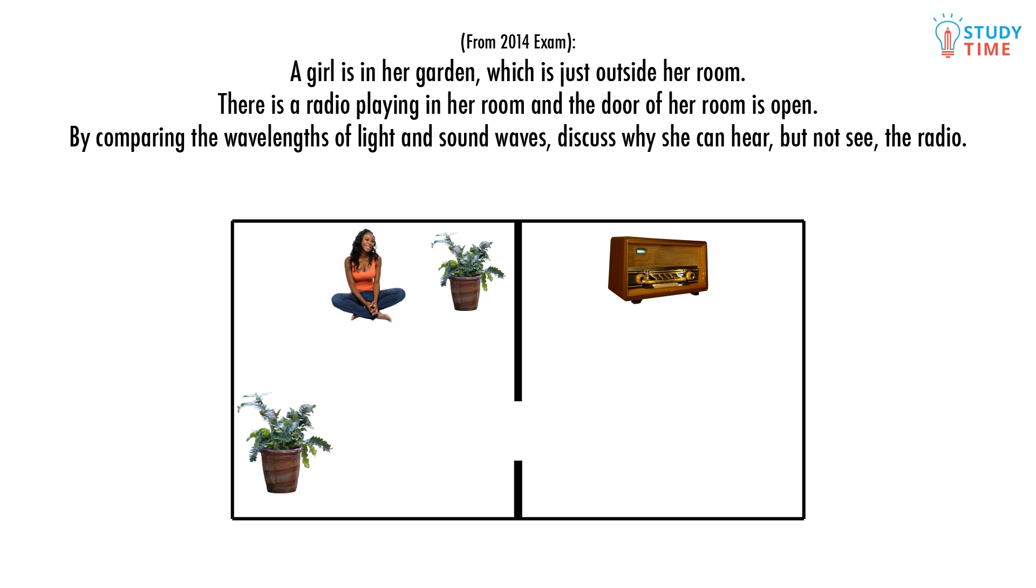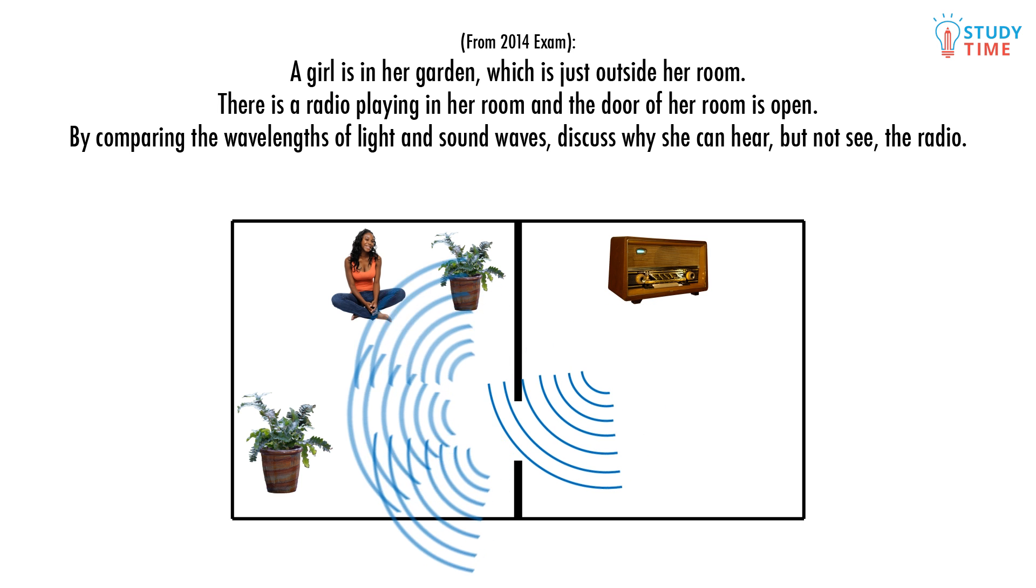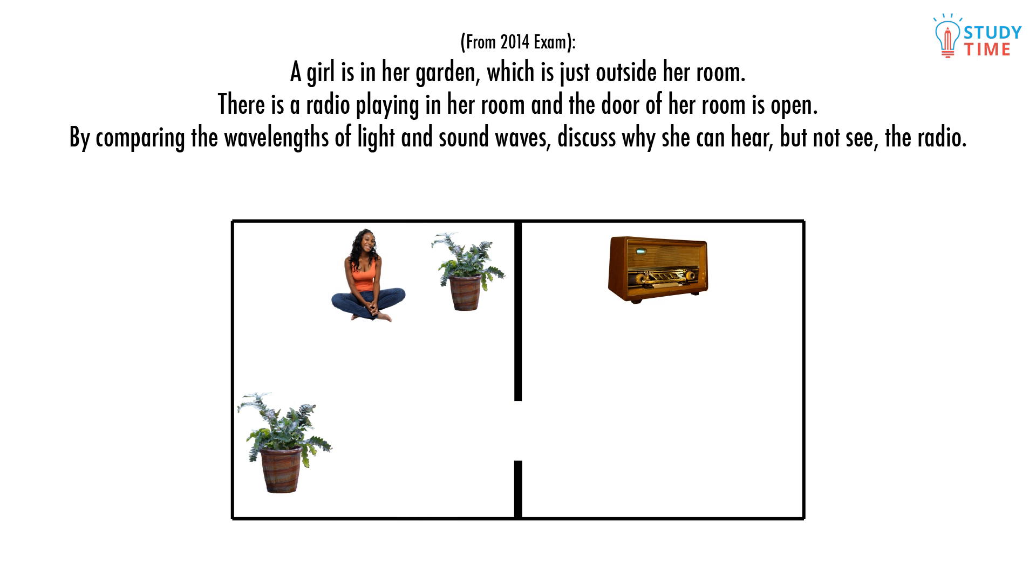Light waves have very very tiny wavelengths, so even if the wavelength of sound isn't quite as large as the width of the doorway, it will still be closer to it than the wavelength of light is. And so sound waves will diffract a lot more. This is what makes her able to hear the radio but not see it.